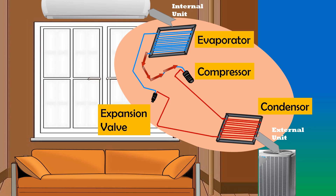This gas flows to the compressor where it is compressed and becomes hotter. Then, this high-pressure hot gas enters the condenser, which is outside the room. The condenser cools down the hot gas and turns it back into a cool liquid. During condensation, the heat released by the refrigerant mixes with the surrounding air and this hot air flows out with the help of a fan.